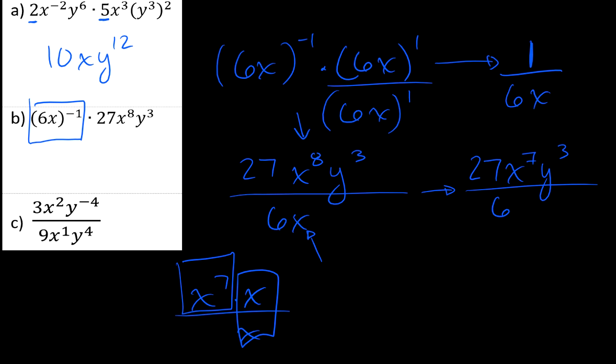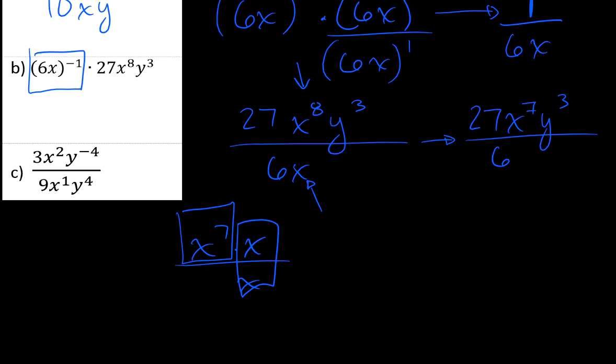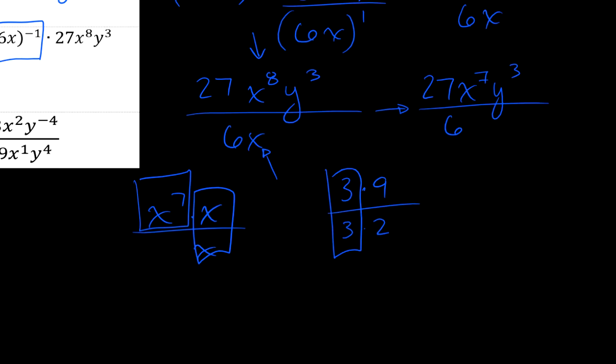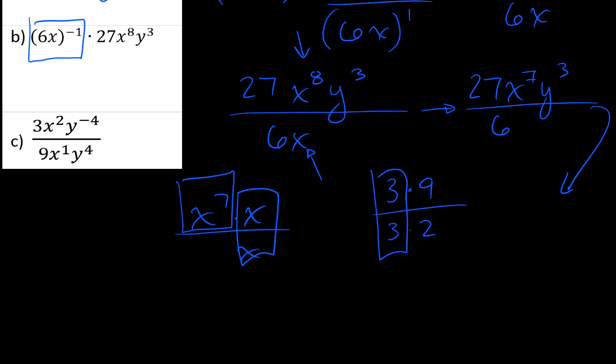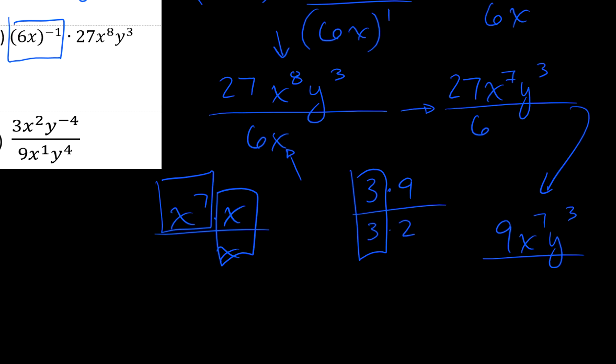So now I'm going to write down, this is 27x to the 7th power times y to the 3rd, and this is all going to be over the number 6. So the last thing that I'm going to do is I'm going to look at the 27 over 6. 27 is 3 times 9, so I'll write it as 3 times 9 over 6, which is 3 times 2. So again, I'm looking at it like this. I see there's a giant one there. So my final answer for this would be 9x to the 7th y cubed, and that'll all be over the number 2.